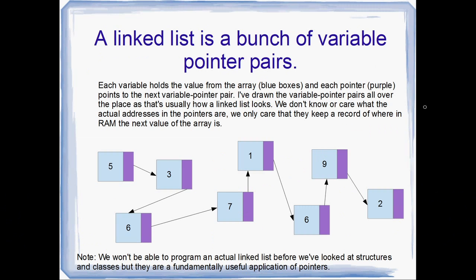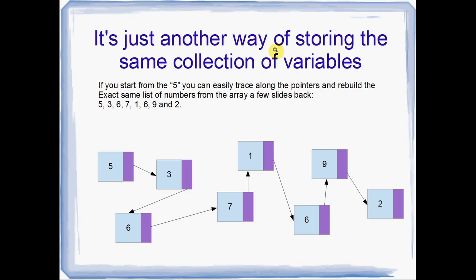So we don't store arrays like this when we need to add values to the middle. We use a linked list. A linked list is just a bunch of variable-pointer pairs. Each variable holds a value from the array — those are the blue boxes. Beside each variable there's also a pointer, colored purple. We don't know or care what the actual addresses in the pointers are — the only thing we care about is that they point to the next value in the list. We won't actually be able to program a linked list before we've looked at structures and classes, but they're a really good demo of what pointers are used for.